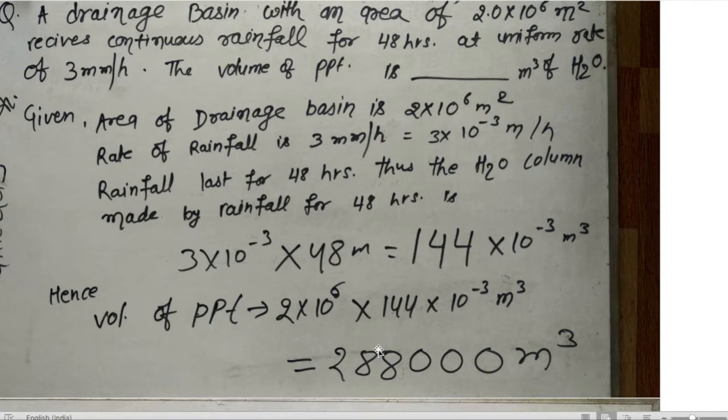When we multiply these two values, we get the total volume of precipitation in meter cube of water. The final answer is 2,88,000 meter cube of water. It's very easy — all you have to know is how to proceed.